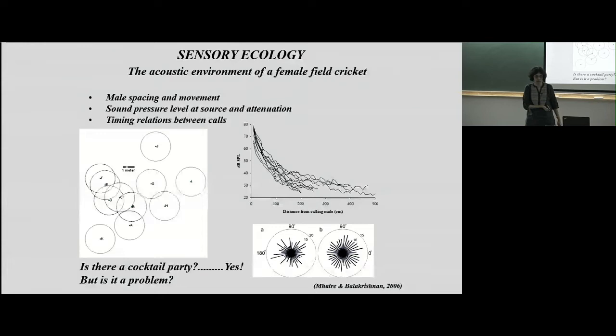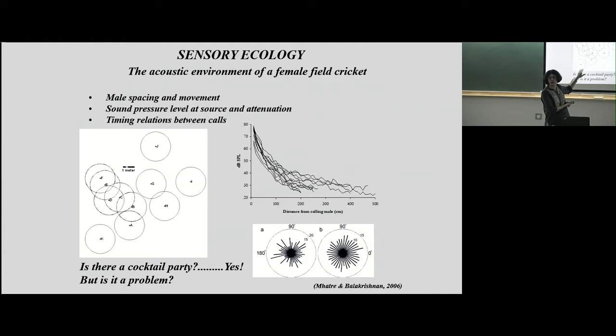You can draw a circle one meter from each of these males — that's the limit of his broadcast range. A female standing inside this circle will hear that male. If the circles overlap, it means she can hear signals from multiple males simultaneously. What we get from this is that about 60% of the time, females are indeed in a cocktail party situation. So yes, there is a problem.